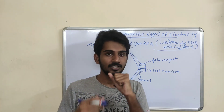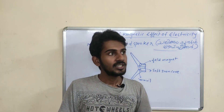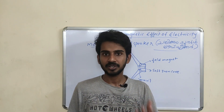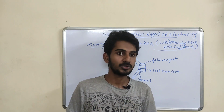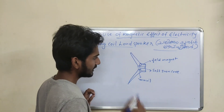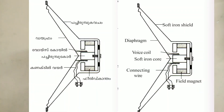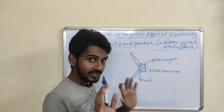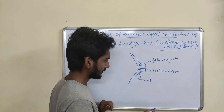He talked about the loudspeaker - how to work the magnetism. The main parts are: a field magnet, a soft iron core, and a voice coil. Is there a voice coil? Yes, there is a field in the back of the voice coil - soft iron - and the magnetic field lines are in the voice coil.